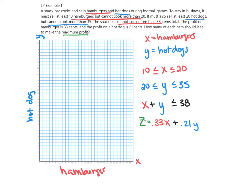The first constraint says X is between 10 and 20. Don't forget we also need our non-negative constraints, which say X is greater than or equal to 0 — you have to make hamburgers — and Y is greater than or equal to 0. X greater than or equal to 10 is a vertical line at X equals 10, and greater than or equal to 10 means we shade to the right of that line.